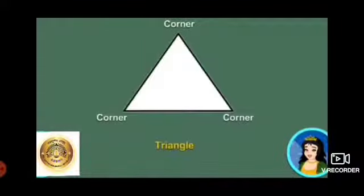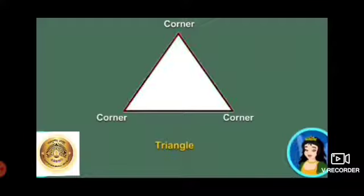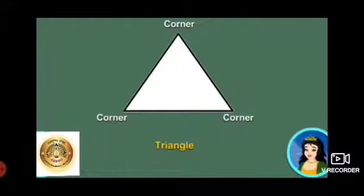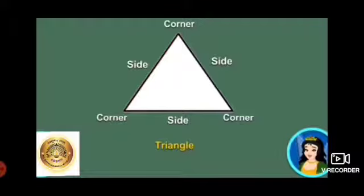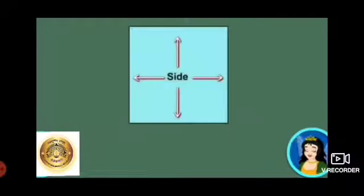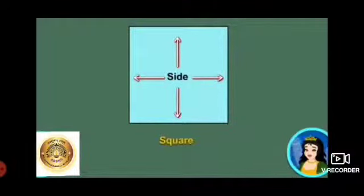This shape is called a triangle. It has three corners and three straight lines. This shape is made up of four equal straight lines — it is a square. It has four corners and four sides.